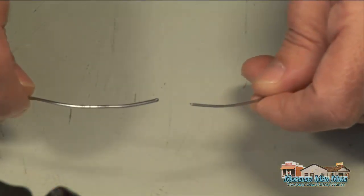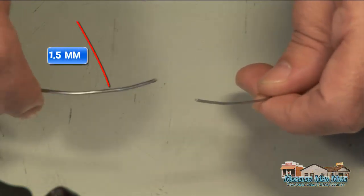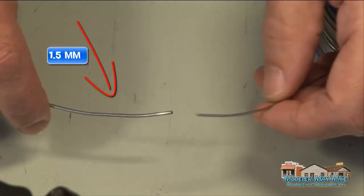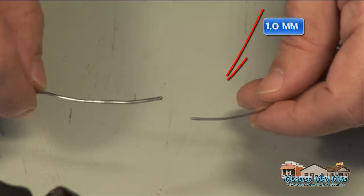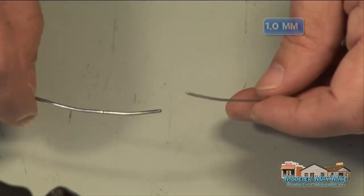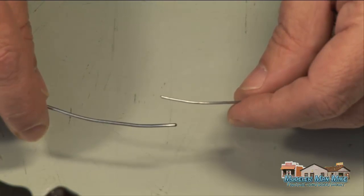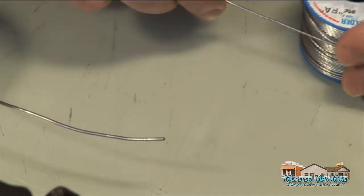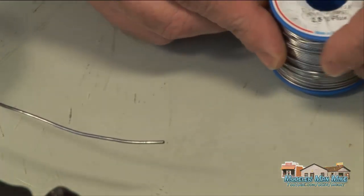The difference in the diameter here is on the left is the 1.5mm and the right is 1mm. To apply the right amount of solder, you need the right thickness.